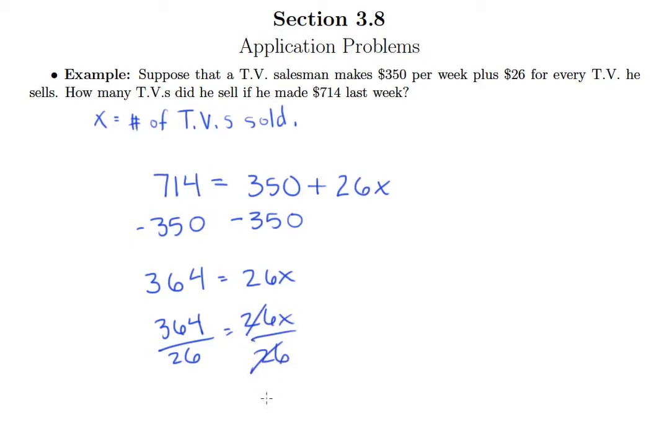And so we have 364 divided by 26. That'll isolate my X and we'll need to do a little division here. So 26 goes into 36 one time. And let's see, 26 goes into 104 how many times? Four at the most. So four times six is 24 and it goes in exactly four times.